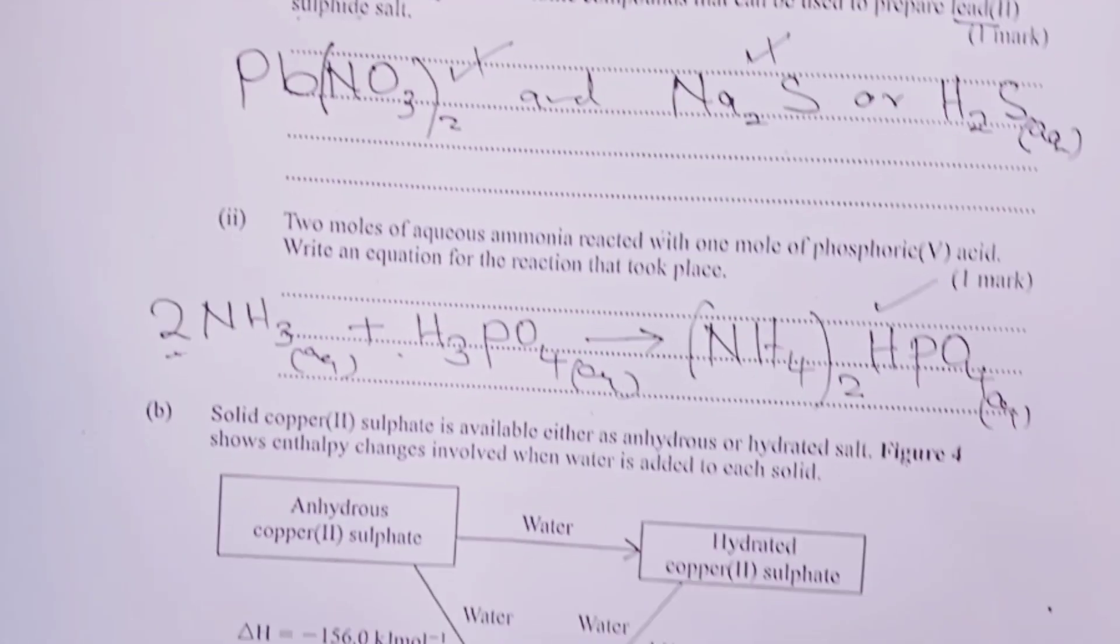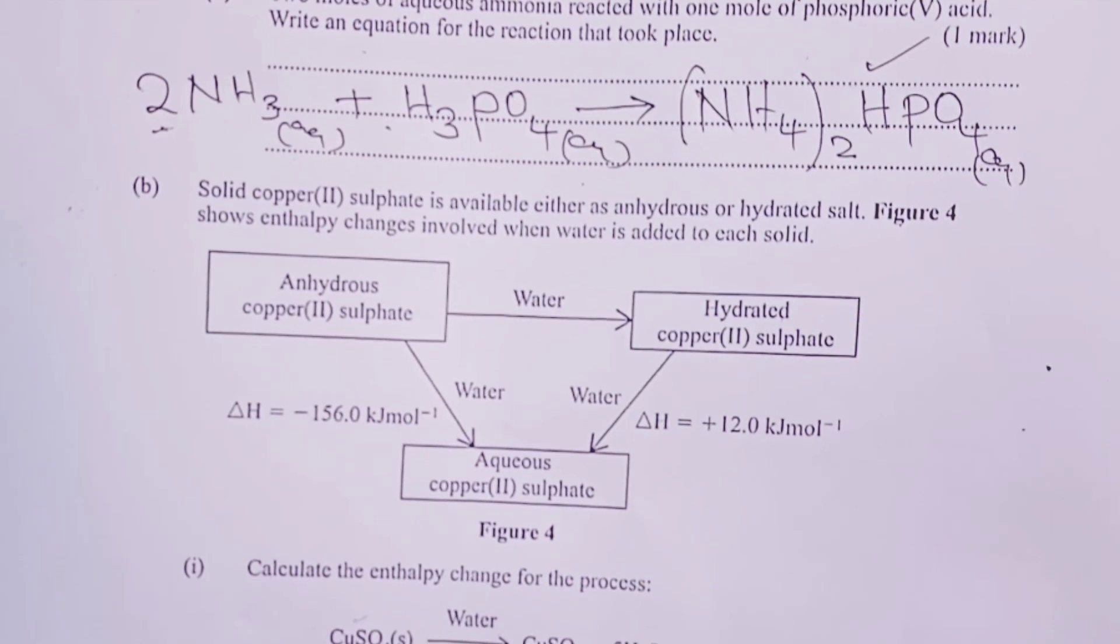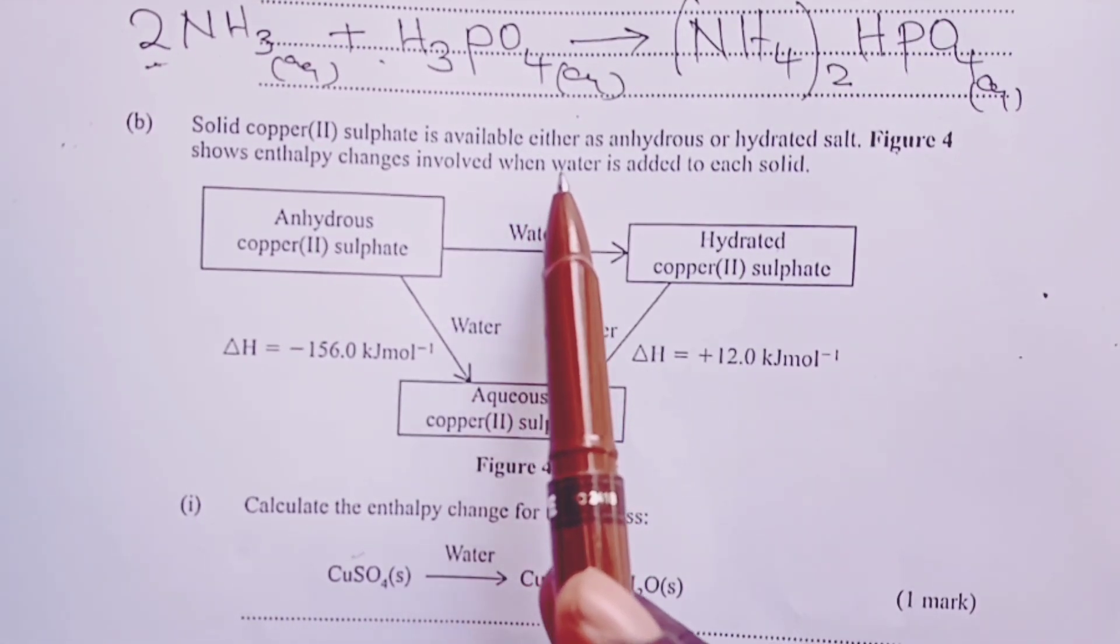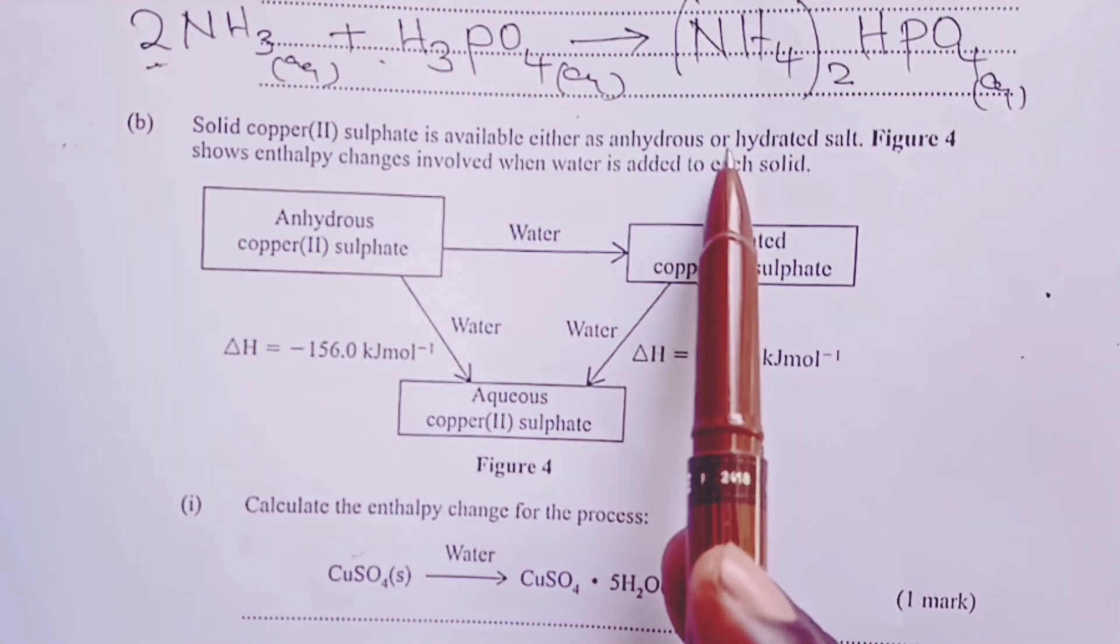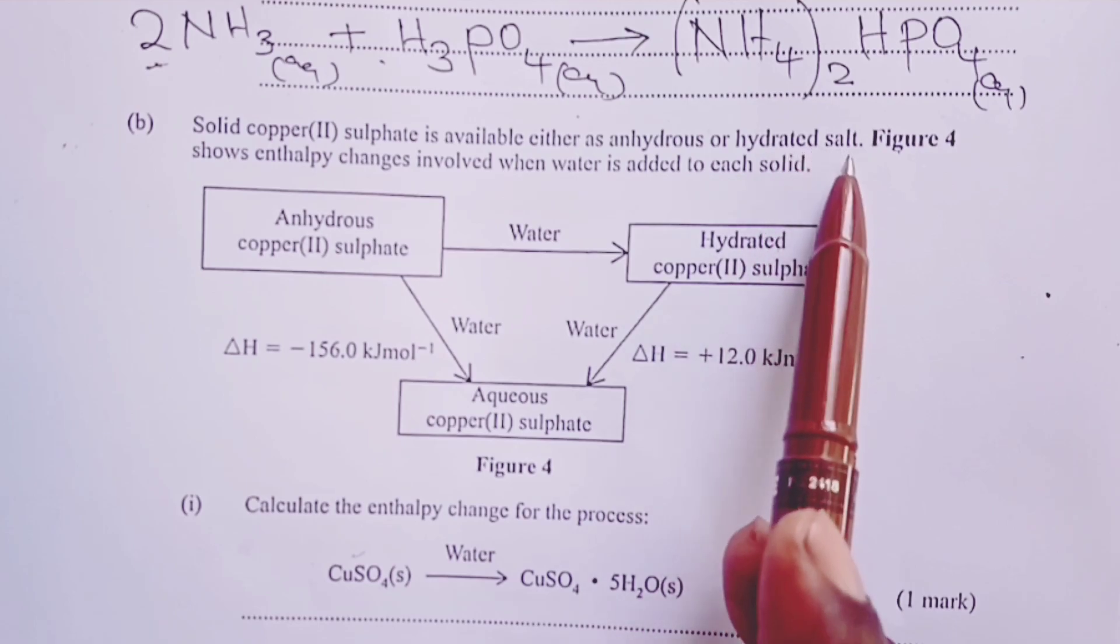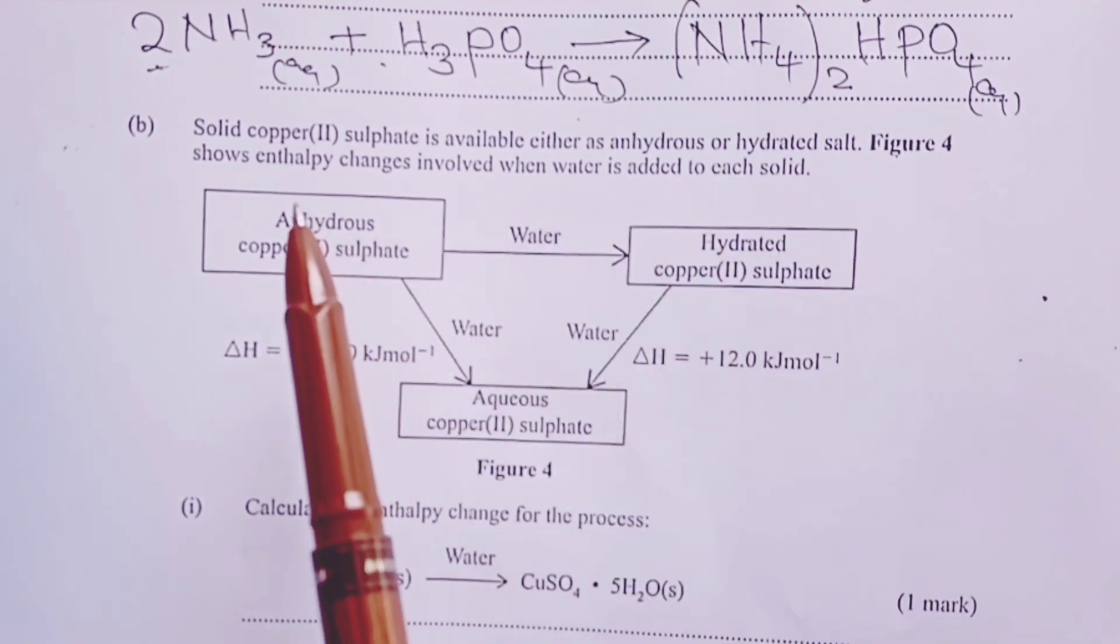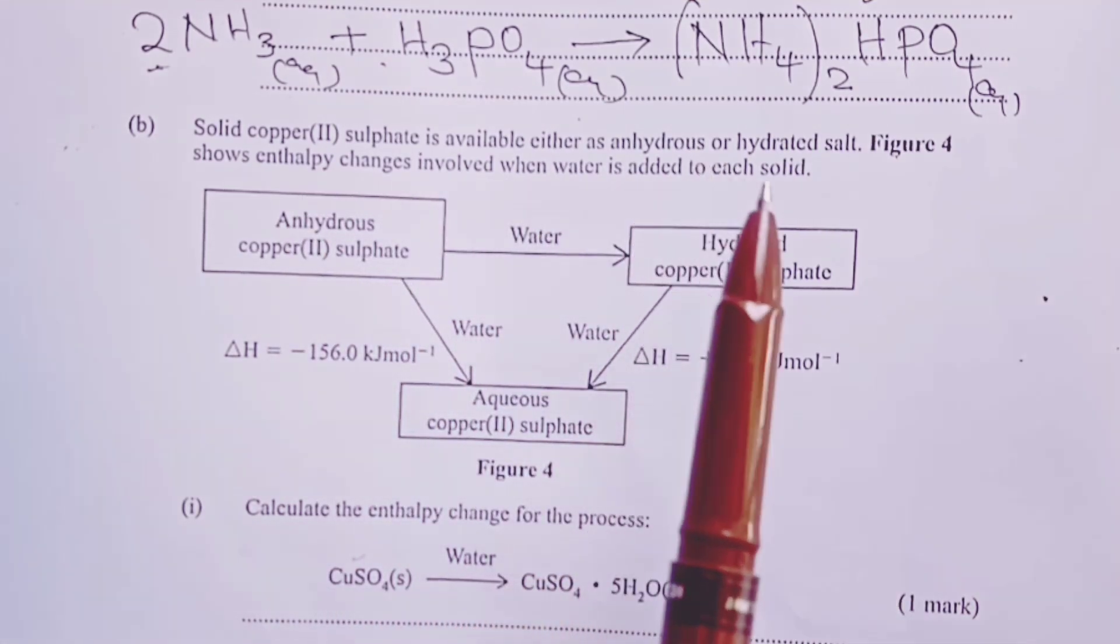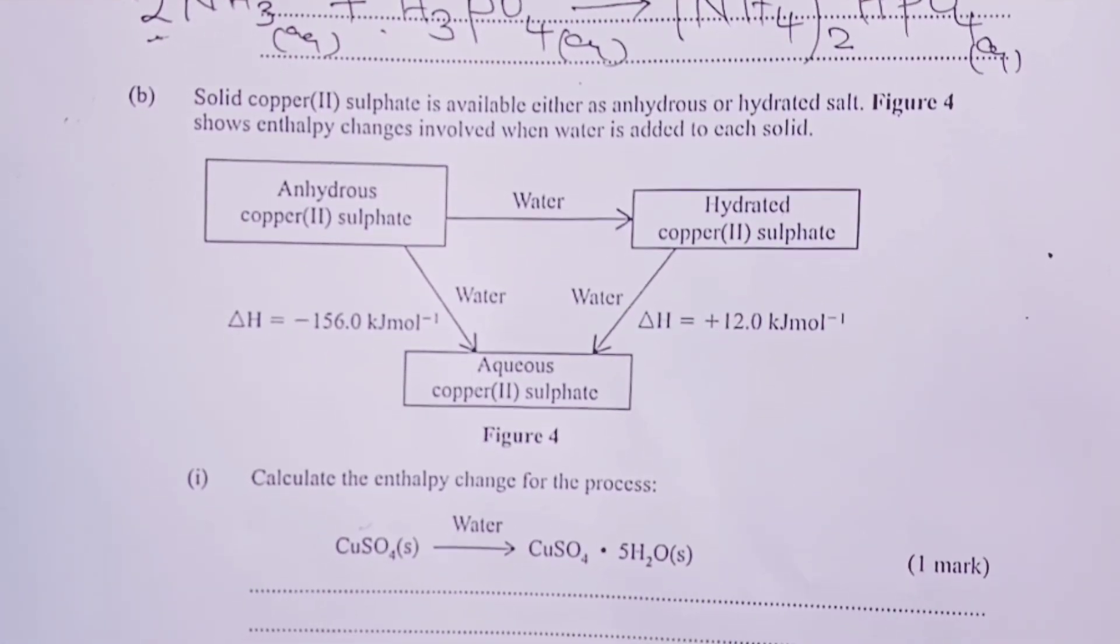Part B is stating that solid copper(II) sulfate is available either as anhydrous or hydrated salt. We are told that Figure 4 shows the enthalpy changes involved when water is added to each solid. So this question was specifically testing on Hess's law.